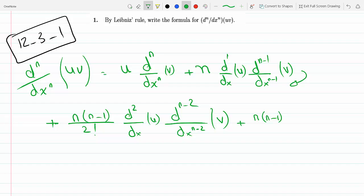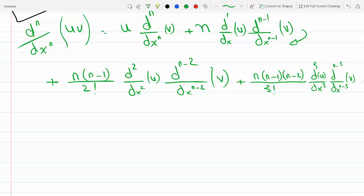If I do the third one, I bring the n-2 down, so this will be n times (n-1) times (n-2) over 3 factorial. And now it's the third derivative of u with respect to x cubed, and then this is the (n-3)th derivative of v.